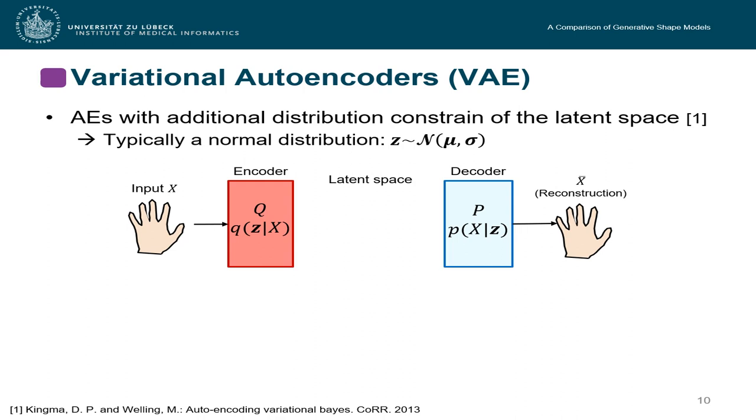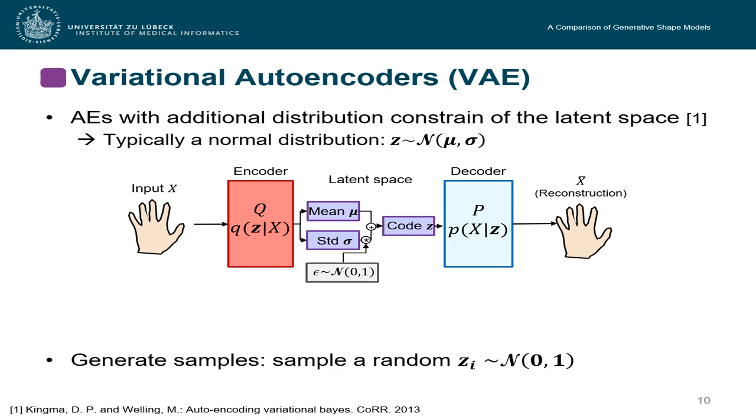This is done by an extension of autoencoders, the variational autoencoders, which also consider an additional distribution of the latent space, typically a normal distribution. So now the encoder predicts a mean and the standard deviation is then varied by some random factor. And we can now generate our z vector. The main advantage of this method is that now we can sample z from a normal distribution and be pretty sure that the generated shape will be very plausible.